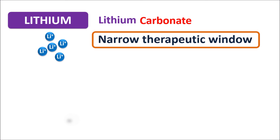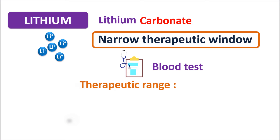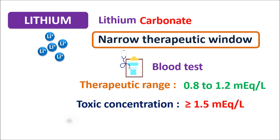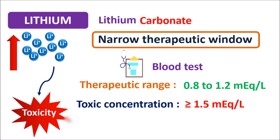As discussed, lithium has a narrow therapeutic window — the gap between the therapeutic range and the toxic range is small. The therapeutic range of lithium is 0.8 to 1.2 milliequivalents per litre, while the toxic concentration is greater than or equal to 1.5 milliequivalents per litre. The upper limit of the therapeutic range is 1.2 and toxicity starts from 1.5, so any small increase in lithium levels may produce significant toxic effects. Regular blood tests should be done to monitor lithium levels.